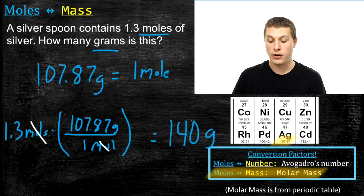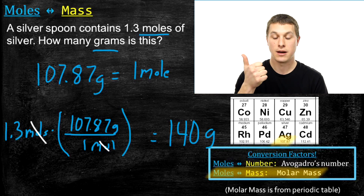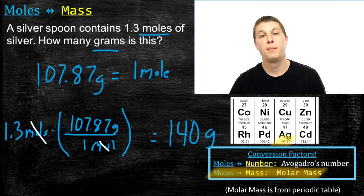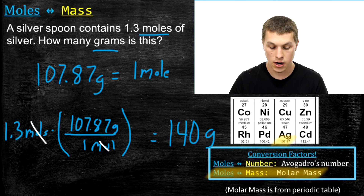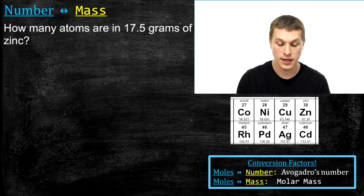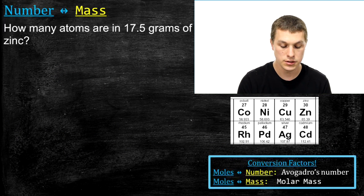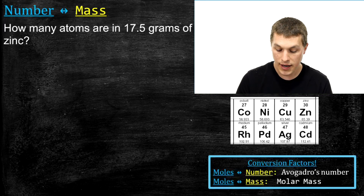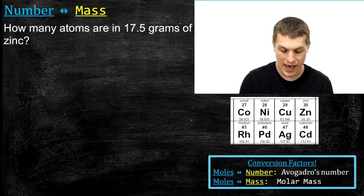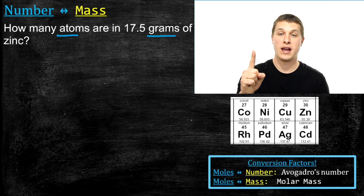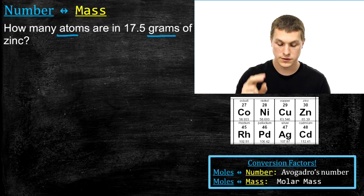We've talked about how you go between moles and numbers of atoms, and how you go between mass and moles of atoms. Now we're going to combine those two things to answer our original question: how many atoms are in 17.5 grams of zinc? This is a multi-step conversion. I'm going to use two steps: first from grams to moles, then from moles to atoms.